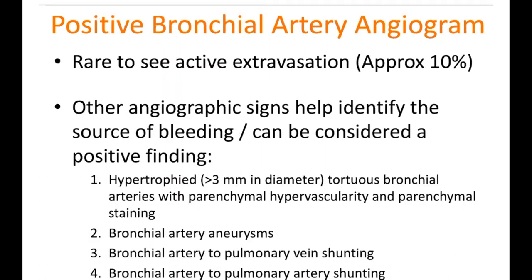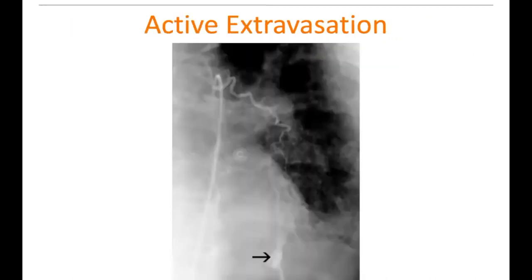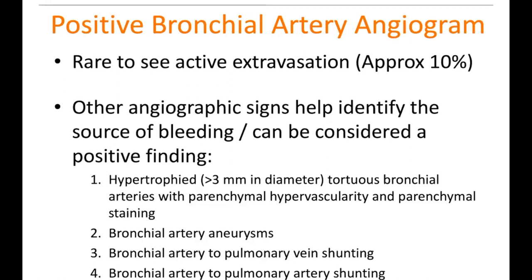What is a positive bronchial artery angiogram? We rarely see active extravasation — only about 10%. It's really the irregular vessels that indicate positive findings. Hypertrophied vessels with parenchymal hypervascularity, bronchial artery aneurysms, and shunting from the bronchial artery to the pulmonary vein or pulmonary arterial system are all signs. This is why bronchial artery aneurysms can be quite difficult — unlike acute trauma where you can clearly see blood pooling, the findings here are more subtle.